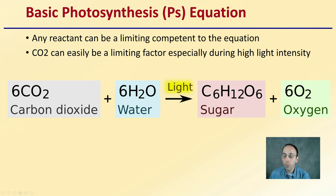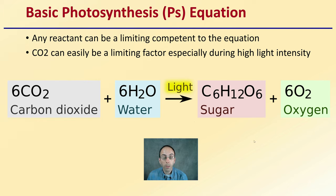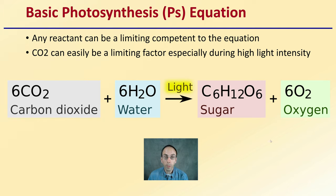First off, we have to understand the basic equation — the basic photosynthetic equation. Any reactant, and reactants are on the left, can be a limiting reactant as far as generating sugars and oxygen. Carbon dioxide is easily a limiting factor, especially during high light intensities. So as growers, to maximize plant production — typically sugars in the end — we want to make sure carbon dioxide, water, and light are not going to be limiting as far as the plant is concerned.